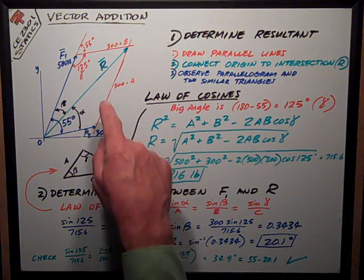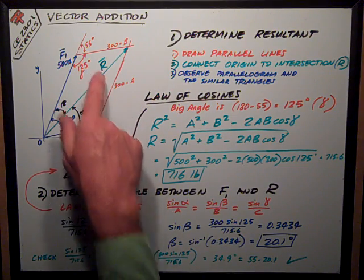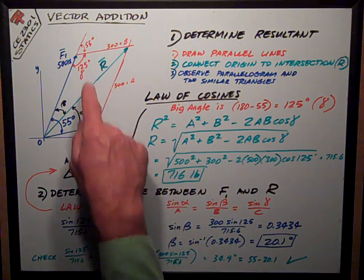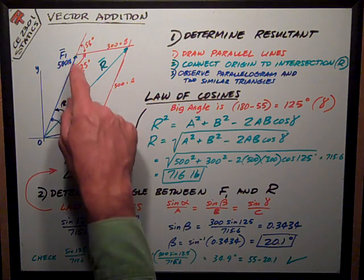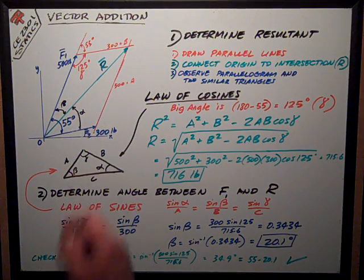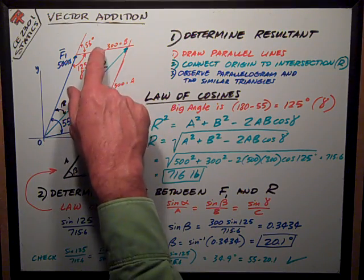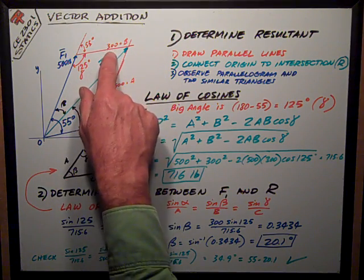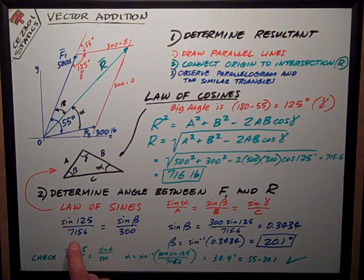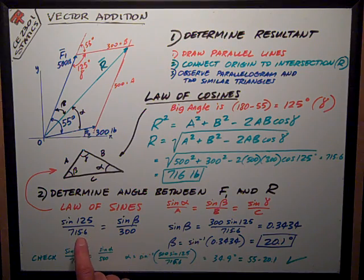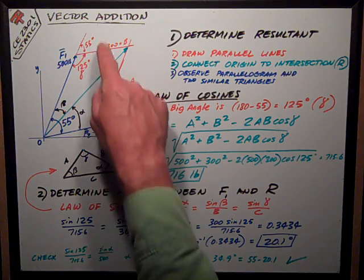For this case, I know this angle, 125 degrees. I've just solved for the resultant, 715.6. That's the opposite side divided into the sine of the angle opposite it. I want to know this angle—its opposite side is this 300 pound length or magnitude up here.